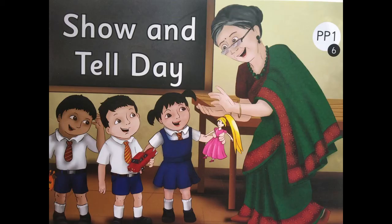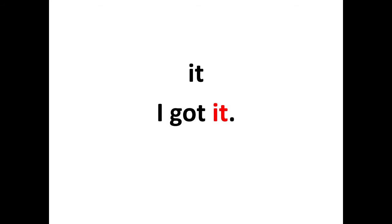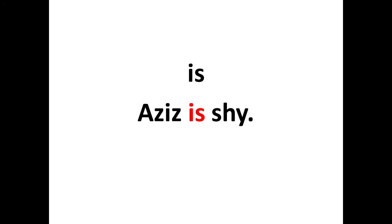The name of the story is Show and Tell Day. Can you see, children, in the sentence it is highlighted in red? The word is 'it' and the sentence is 'I got it.' Next word is 'is.'